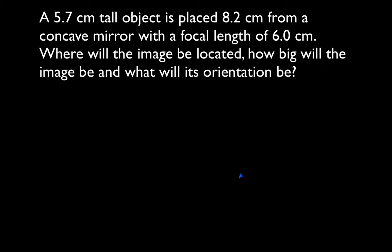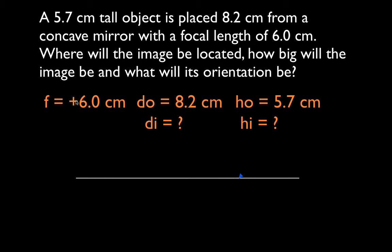It's an object that's 5.7 centimeters tall. It has an object distance of 8.2 centimeters and the focal length of a concave mirror is 6 centimeters. The first thing to do is write everything down. Since it is a concave mirror, that means that the focal length is positive. I want to remind myself there's a difference between concave and convex mirrors. Convex mirrors have a negative focal length. Object distance 8.2, object height 5.7. Of course, we want to know the image distance and the image height.